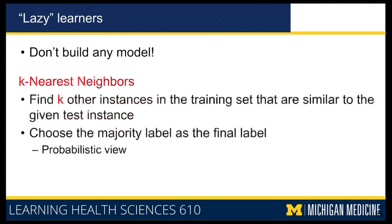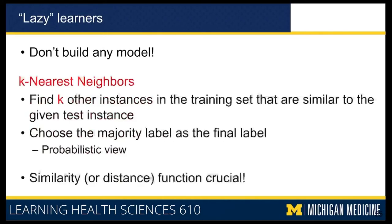By doing this, it creates a probabilistic view — the notion of seeing what your neighbors are doing and doing what your neighbors do. In this approach, you pick K different instances, and because you need a majority, K is typically odd. So if you choose five different neighbors, it becomes a five nearest neighbor classifier.